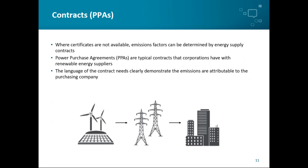Energy contracts are also at the top of the emissions factor hierarchy for market-based reporting. In markets where energy attribute certificates aren't available, companies can use emissions factors from the contracts they have with their energy suppliers. Power purchase agreements (PPAs) are typical contracts used to buy electricity directly from the supplier. These may be used to convey the generation attributes — in other words, the emissions factors — if the contract includes language confirming that the energy and associated emissions are attributed to the buyer. Often an audit trail is required to demonstrate that no one else is claiming the benefit from the PPA.